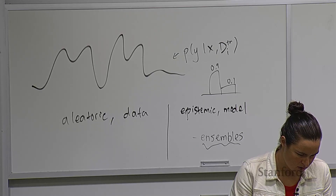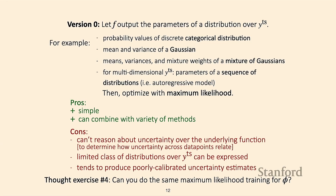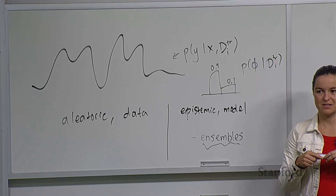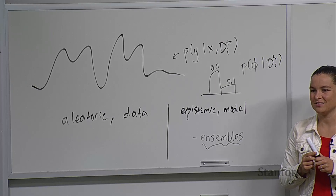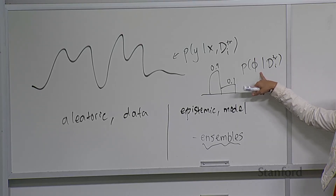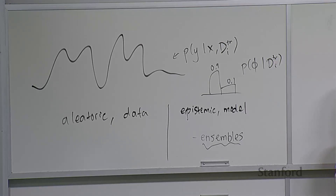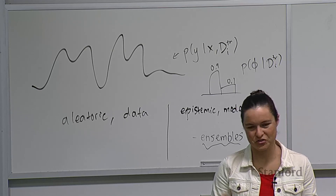Thought exercise: we've talked about having our meta-learner output a distribution over Y and training with maximum likelihood. Instead of outputting a distribution over Y, can we have it output a distribution over phi given our training data and train with maximum likelihood? In order to do maximum likelihood on this distribution, you need ground truth for phi, and we have access to ground truth labels but not ground truth phi's. So we can't just do maximum likelihood on this distribution — that's why we need more interesting algorithms.